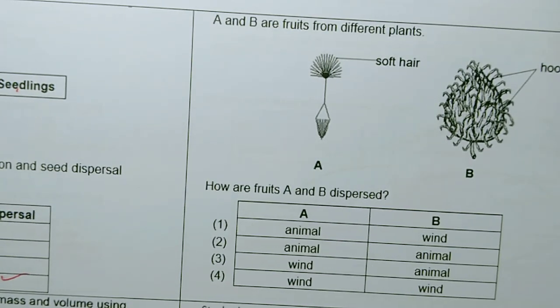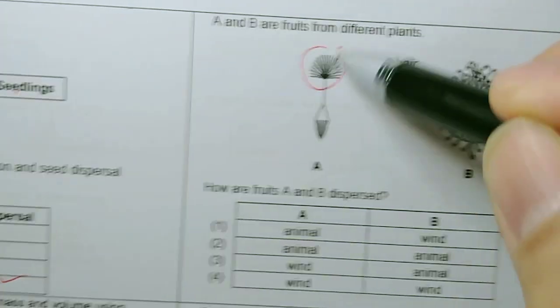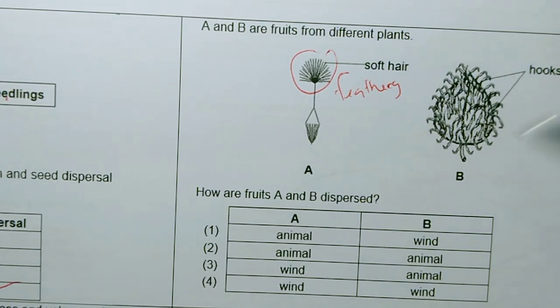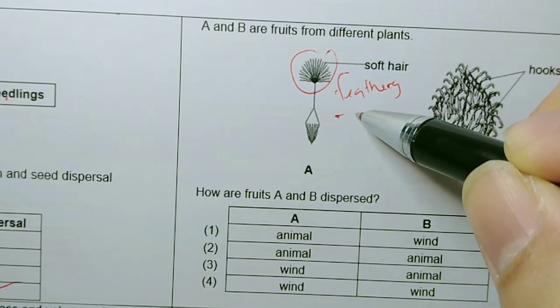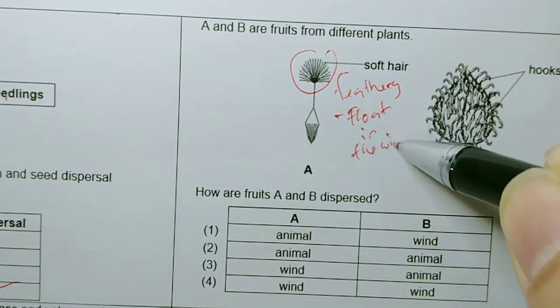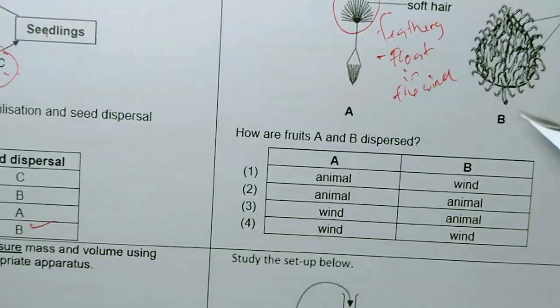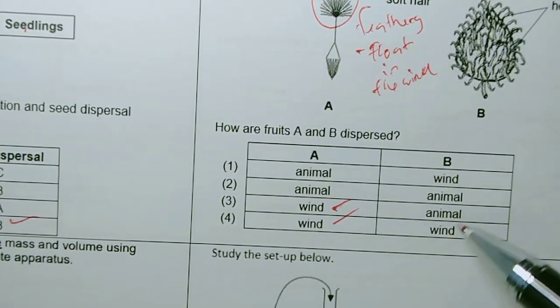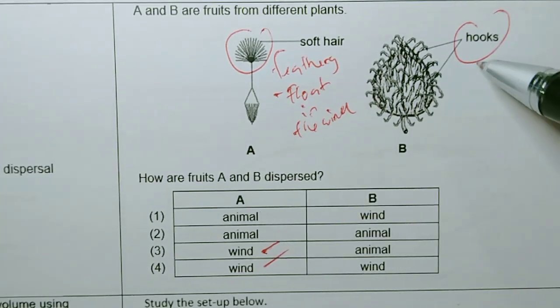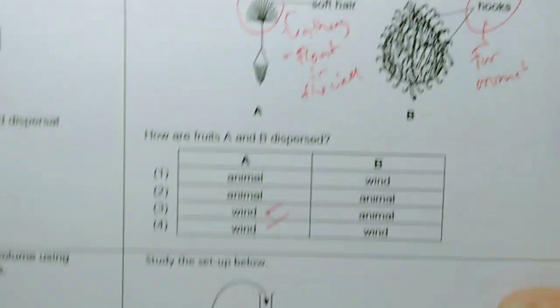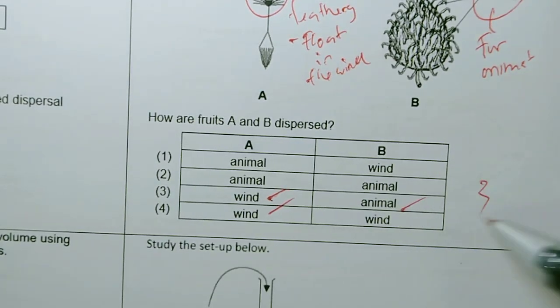You got to know how different seeds are being dispersed. For example, this will be feathery structures, it helps you to float in the wind. Dispersed by wind. So air is wind. By looking at A you cannot get the answer, you got to look at B. Hooks. It tells you it will hook onto the fur of animals. So for B must be by animals. Very straightforward question.